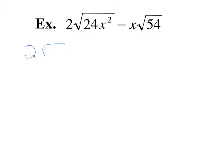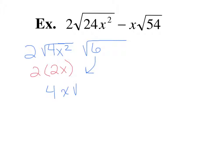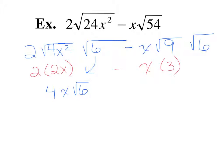Simplifying 2 square root of 24x squared: 24 is 4 times 6, and x squared is a perfect square. Taking the square root of those perfects gives 2x, multiplied by the 2 out front gives 4x, and the not-perfect 6 comes straight down — so 4x square root of 6. For x square root of 54x: 54 is 9 times 6, square root of 9 is 3, multiplied by x gives 3x square root of 6. Since both have square root of 6, subtracting gives 4x minus 3x equals x square root of 6.